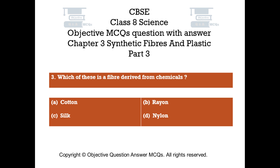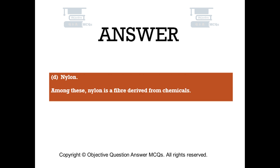Question number three. Which of these is a fiber derived from chemicals? Option A: cotton. Option B: rayon. Option C: silk. Option D: nylon. The right answer is option D — nylon. Among these, nylon is a fiber derived from chemicals.